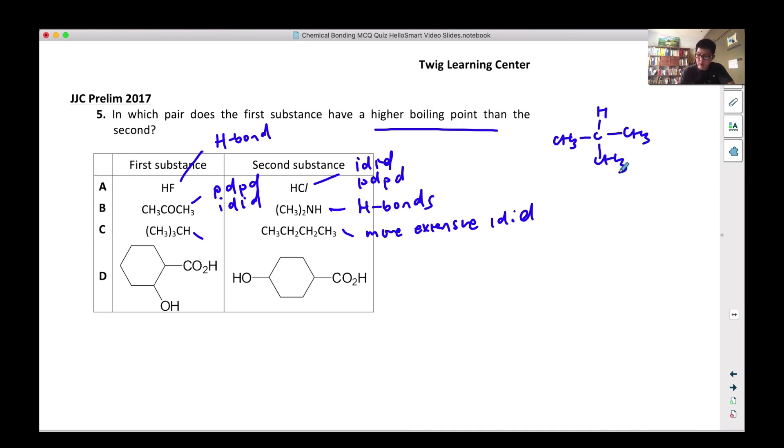this is branched compared to the straight chain. All right, so we know that if it's branched it has a smaller surface area. Smaller surface area also means less extensive IDID, so definitely